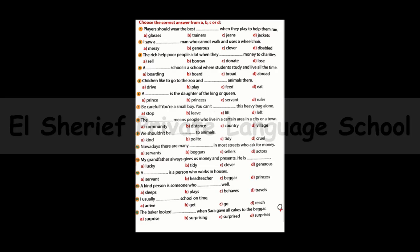Number twelve: A ___ is a person who works in houses. The answer is: a servant is a person who works in houses. Number thirteen: A kind person is someone who behaves well. Number fourteen: I usually ___ school on time. The answer is: I usually reach school on time.